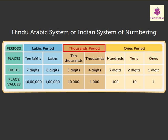The thousands period has two places: thousands and ten thousands. And the lakh period also has two places: lakh and ten lakh.